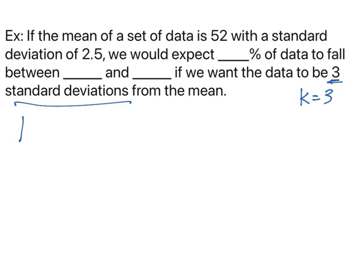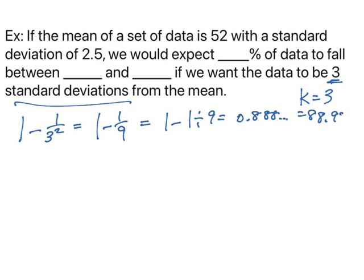If I do 1 minus 1 over 3 squared, that's the same as 1 minus 1 over 9. If I type that into my calculator, 1 minus 1 divided by 9, I get 0.8888 repeating, which is roughly 88.9%. So that's what I'm going to plug in up here: 88.9% of data to fall between what two values.